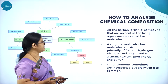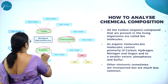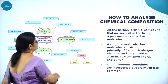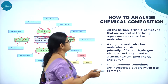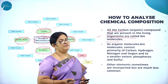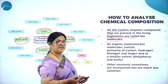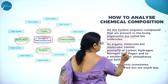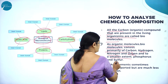How do we analyze the chemical composition? All carbon-containing compounds present in living organisms are called biomolecules, also called biological macromolecules. As organic molecules, biomolecules consist primarily of carbon, hydrogen, nitrogen, and oxygen, and to a smaller extent, phosphorus and sulfur. Other elements are sometimes incorporated but are much less common. From a biological point of view, they are classified into amino acids, nucleotide bases, and fatty acids.